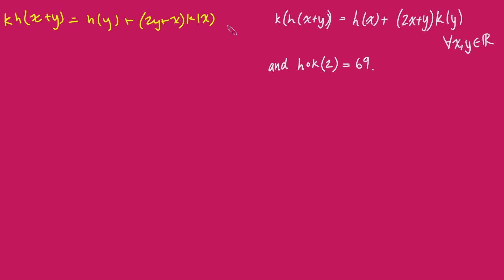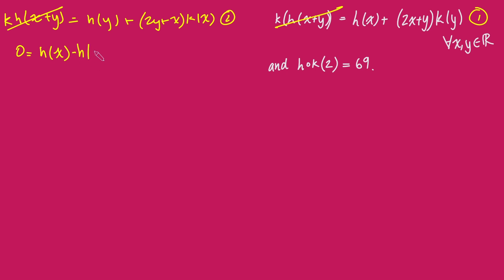How do we prove that k is a linear function? I'm going to take these two equations — call this equation 2 and the original one equation 1 — and just subtract them from each other, doing 1 minus 2. You'll notice these cancel out, and I'm left with 0 equals h of x minus h of y, plus 2x plus y times k of y, minus 2y plus x times k of x. This equation holds true for every single value of x and y.